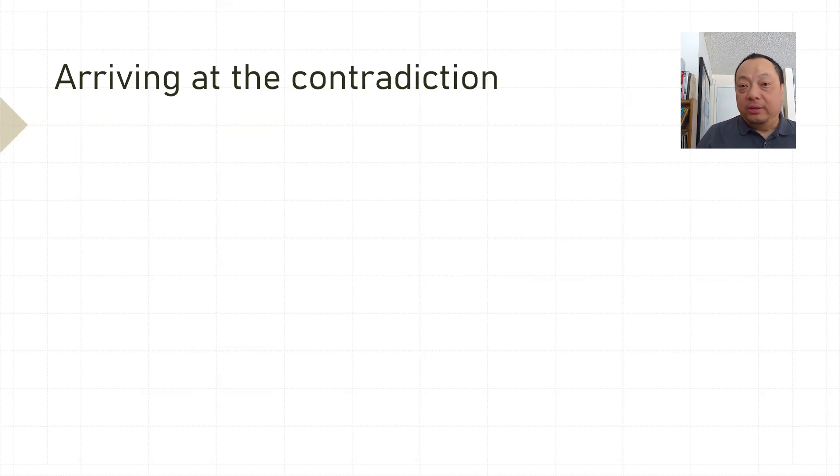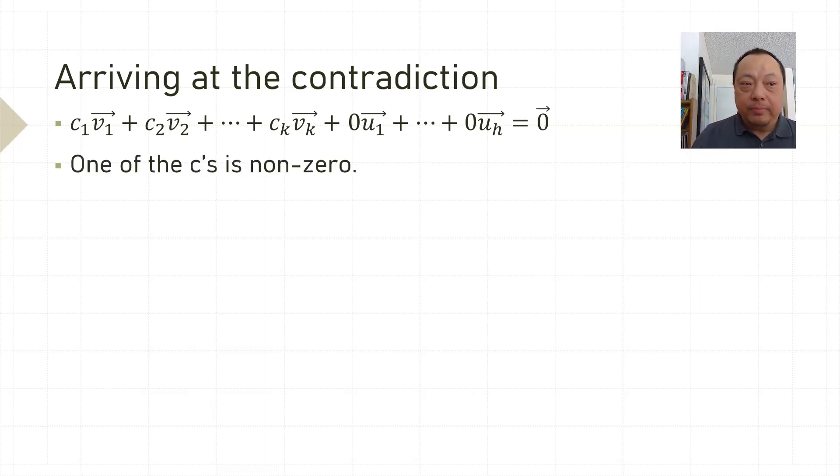Here's our contradiction. This long expression is a linear combination of all the vectors in S. All the v's and all the u's not missing anyone. And we knew at least one of the c's is non-zero because of T.